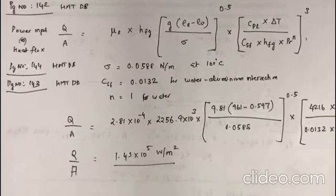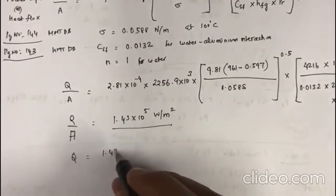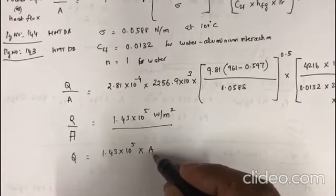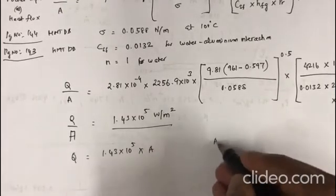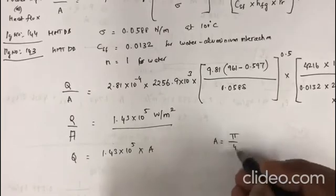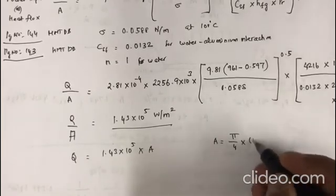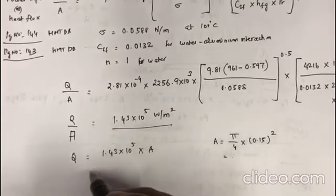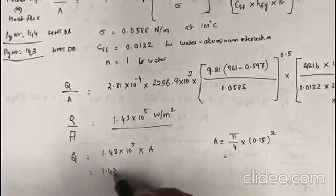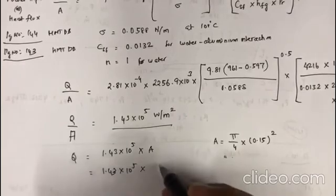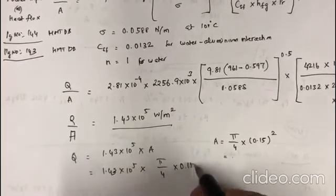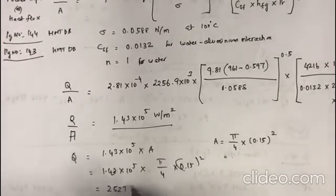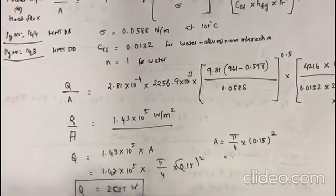Q is going to be 1.43 × 10⁵ multiplied by area. The pan area is the surface area of the pan, which is a circle with diameter 0.15m: A = π/4 × d² = π/4 × (0.15)². This works out to Q = 1.43 × 10⁵ × π/4 × (0.15)² = 2527 watts. This is the power input given to boil this water.